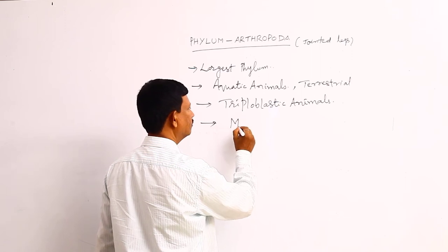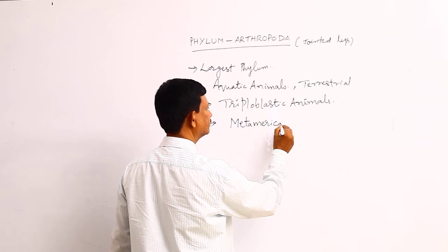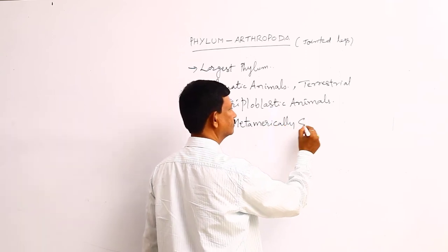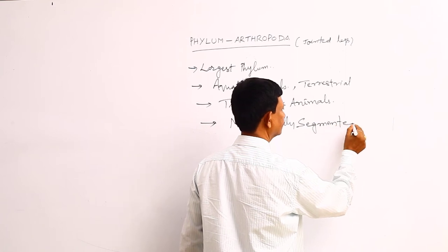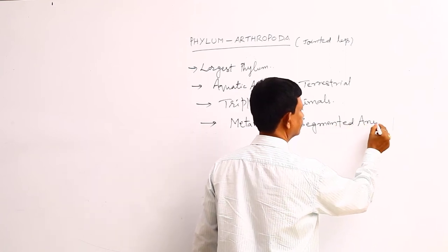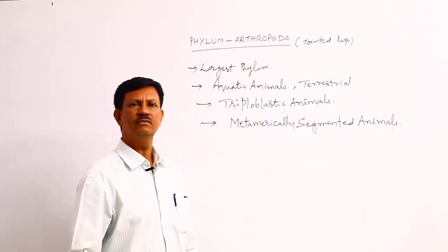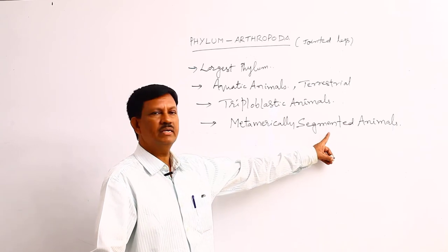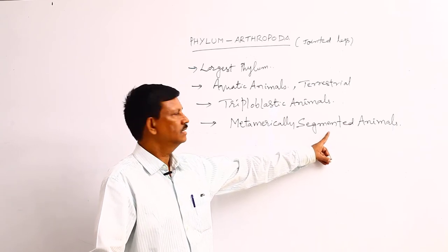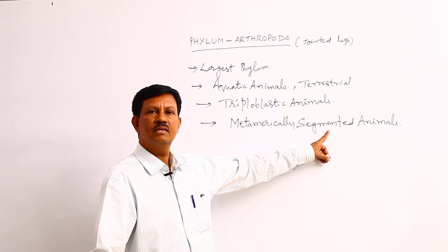They are metamerically segmented animals. The body is divided into different segments. The segment number is always constant. Due to the presence of segments, they show metamerism.